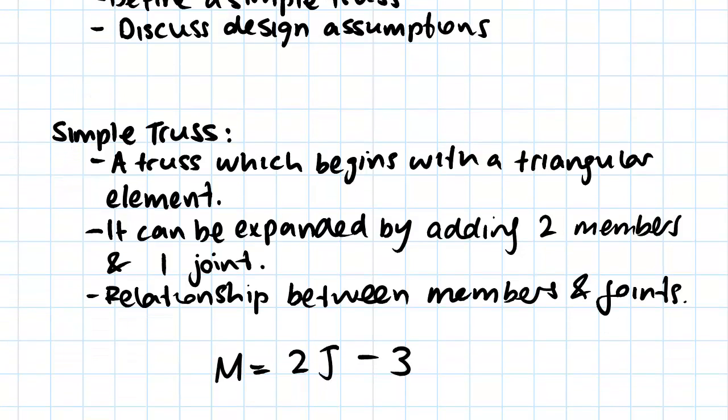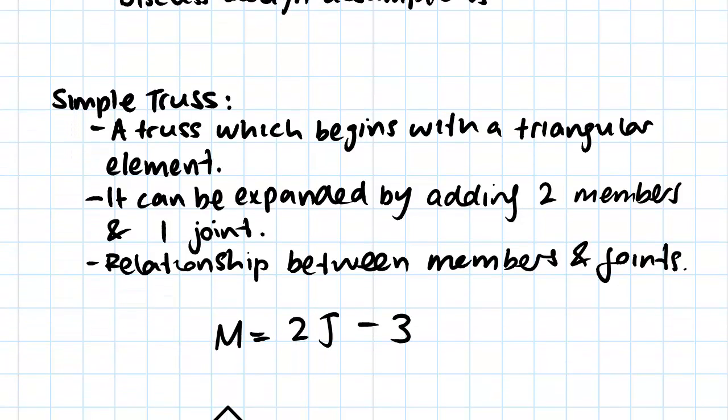We also have a formula which relates the number of members to joints. The number of members is equal to two times the number of joints minus three. If this is true, then we have a simple truss. If this is not true, then we don't have a simple truss.